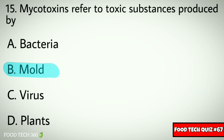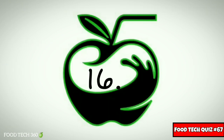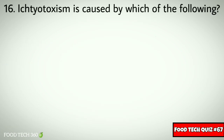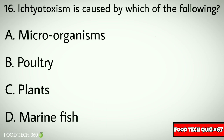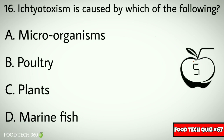Question number fifteen: mycotoxins refer to toxic substances produced by? Options: A) bacteria, B) mold, C) virus, D) plants. Correct answer: B) mold. Question number sixteen: ichthyotoxism is caused by which of the following? Options: A) microorganisms, B) poultry, C) plants, D) marine fish.